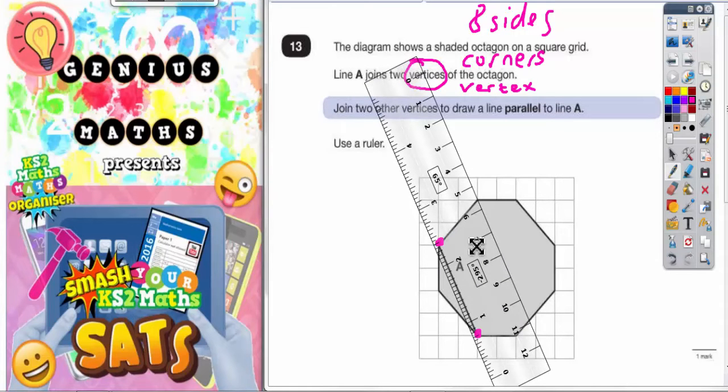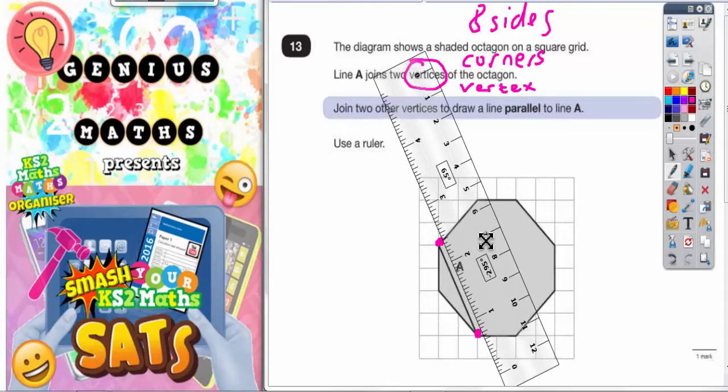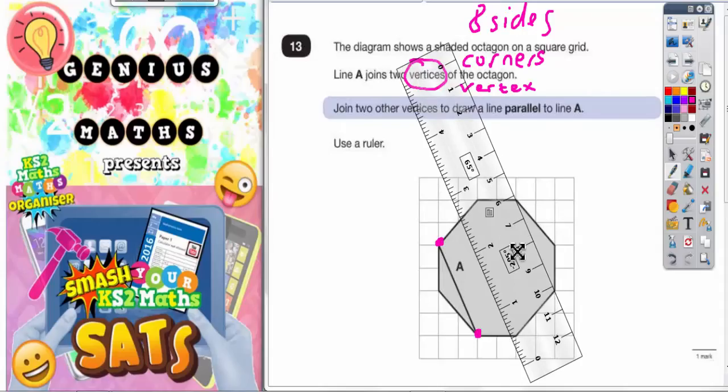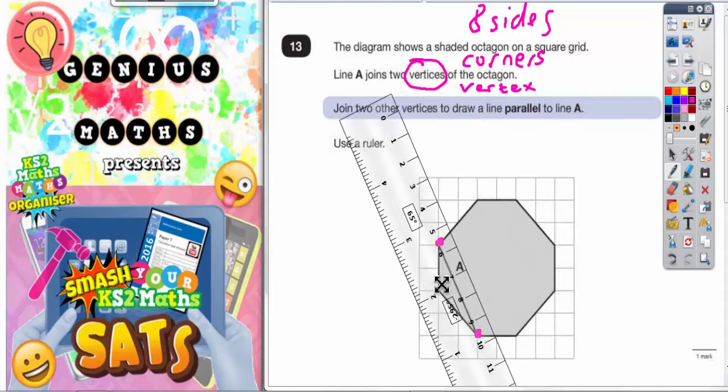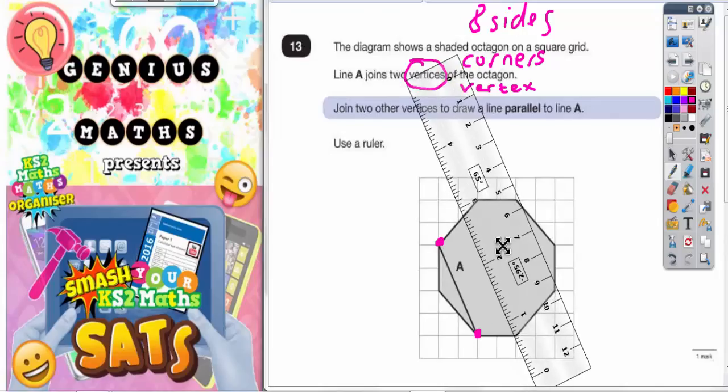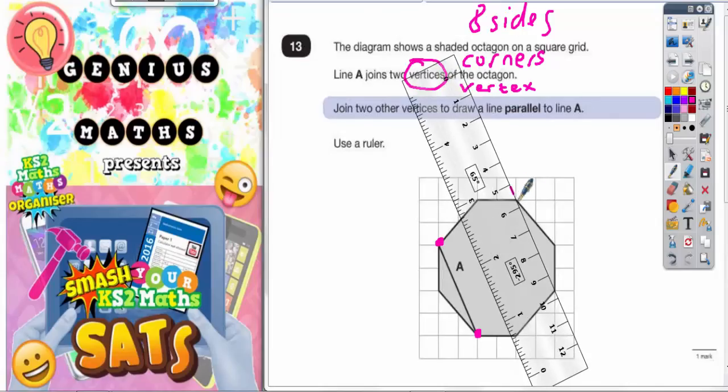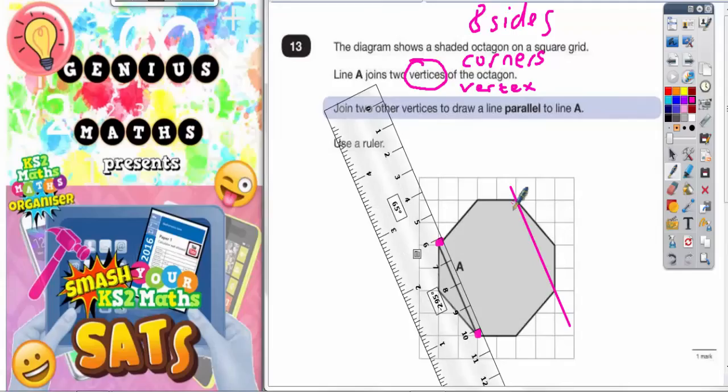Keep sliding. That doesn't work. Keep sliding. And eventually you'll get two corners that work. Now these two corners here are now joined to the ruler and we haven't rotated the ruler. We've just literally slid it from there without rotating it up to there. And that's the answer to that first part of the question.